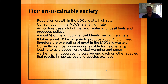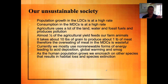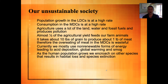Certain aspects of life on Earth are completely unsustainable. The population in less developed countries is growing at an exponential rate, while consumption in more developed countries is huge. Agriculture uses a great deal of land, water, and fossil fuels, and produces pollution. Almost half of what we plant as crops is used to feed livestock. It takes about 10 pounds of grain to produce one pound of meat, and therefore the overeating of meat in more developed countries is wasteful.